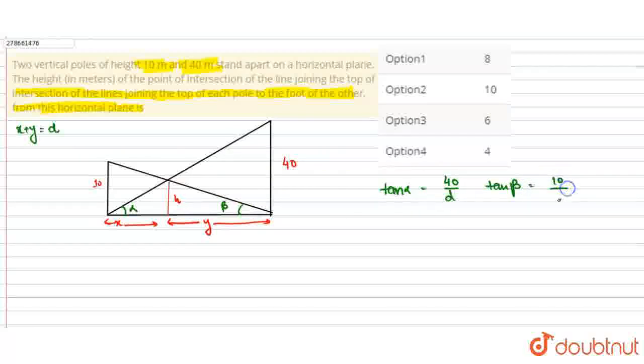Next thing, now in this h triangle that we're considering, from here also we will find tan alpha which is h upon x and tan beta, what will it be? h upon y.